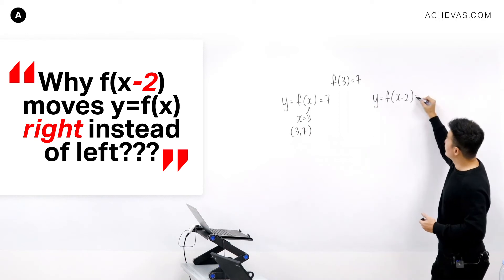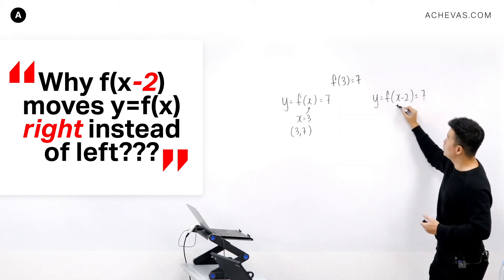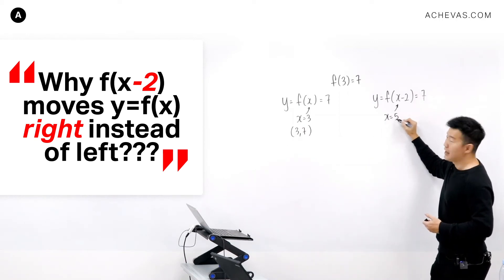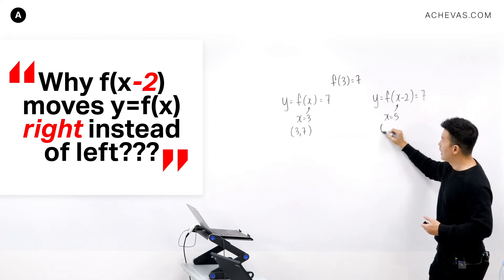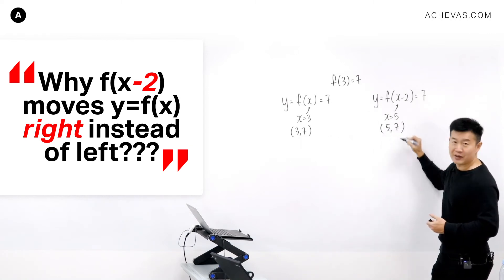But on this particular graph, in order for me to get a 7, what I need to do is let x be equal to 5, because 5 minus 2 is 3, and then f(3) will lead me to a 7, which means that on this graph I will have (5,7) instead.